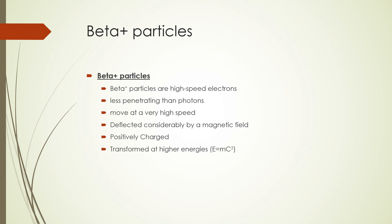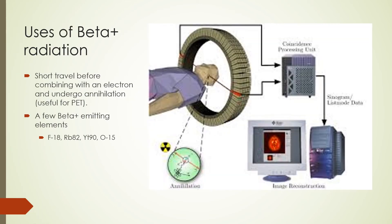Beta plus particles are high speed electrons just like beta minus particles. They are less penetrating than photons and also move at very high speeds. Beta plus particles are deflected strongly by a magnetic field, but because they are positively charged, the deflection is opposite to the direction of beta minus particles. They can be transformed at higher energies in an annihilation reaction to form two collinear photons in what is called positron annihilation. Beta plus particles can travel a short distance before combining with an electron to undergo annihilation — a reaction useful for positron emission tomography or PET imaging. A few beta plus emitting elements are fluorine-18, rubidium-82, yttrium-90, and oxygen-15.